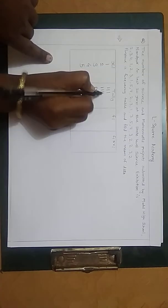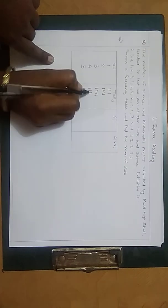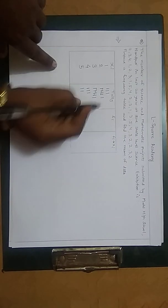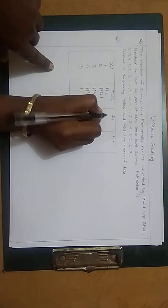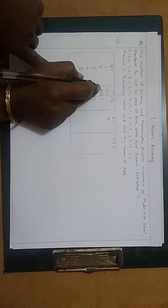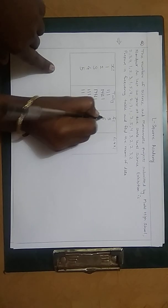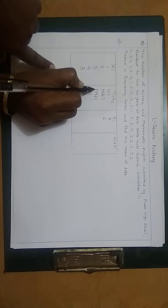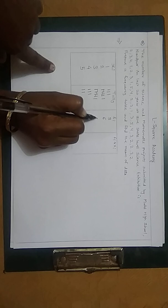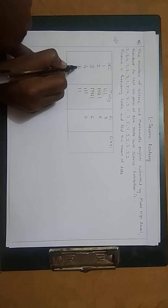Now how many times does 1 occur? It is 3 times. 2 occurs 1, 2, 3, 4, 5, and 6—6 times. 3 occurs 1, 2, 3, 4, 5, and 6—6 times. 4 occurs 3 times, and 5 occurs 2 times.